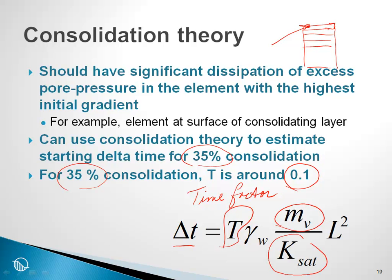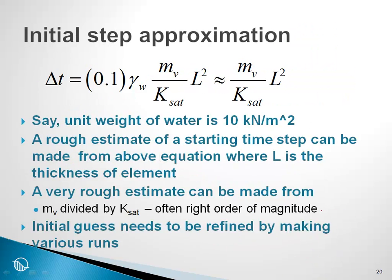This is M sub V, a soil property. This is the saturated conductivity, also a soil property, and then we have some area term here. Or in other words, if it was vertical flow, it would be the thickness of the element or the thickness of the sample.